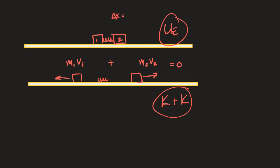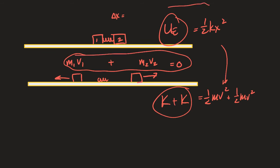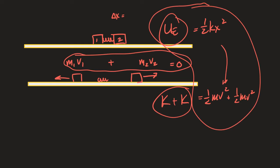This problem conserves energy and also conserves momentum. We say the energy was ½kx² before, and now the energy is ½mv² plus ½mv². So I can set these equal to each other, giving me two different equations to work through the problem. With two unknowns, I could have two equations. You'll find a velocity after the spring is released.